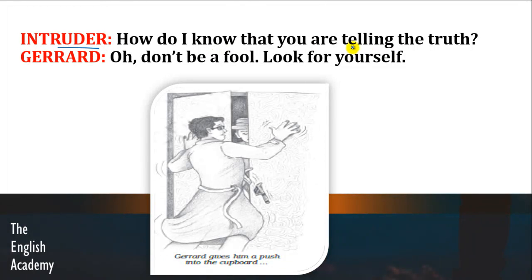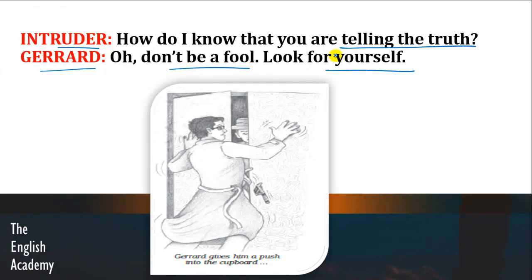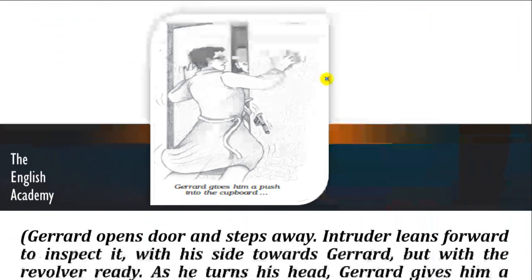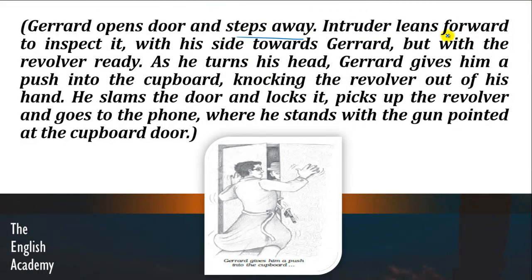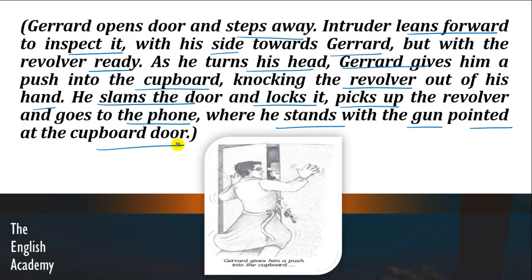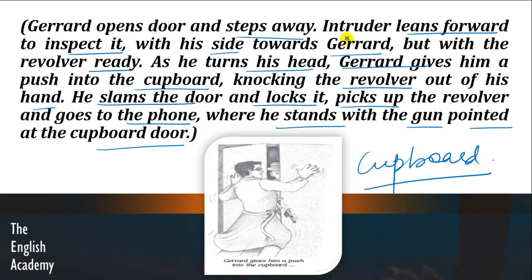Intruder says: 'How do I know that you are telling the truth?' Gerard says: 'Oh don't be a fool, look for yourself.' Gerard opens a door and steps away. Intruder leans forward to inspect it with his side towards Gerard but with the revolver ready. Intruder kehta hai ke mein kaise tumhari baat par vishwaas karun ke tum sach bol rahe ho. Gerard kehta hai ke bevkoof mat bano, jaa khud ja kar khidki se baahir dekh lo — woh usse ek darwaza dikha raha tha, kehta hai ke yeh garage ka darwaza hai, baahir jhaanko.